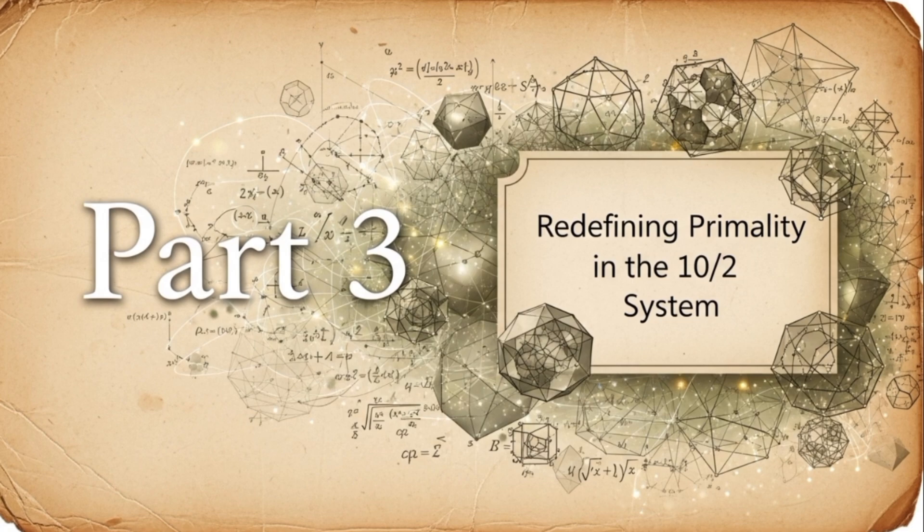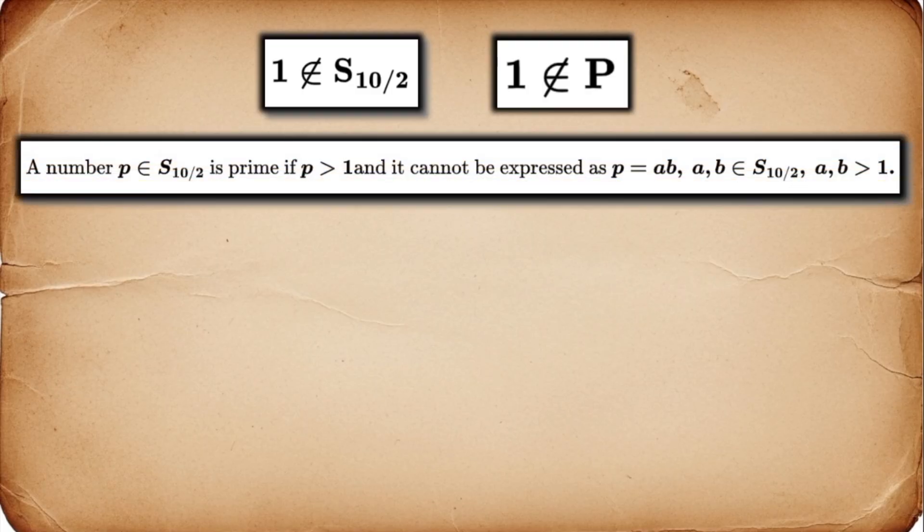Now here is where things get truly interesting. What does it mean for a number to be prime? Normally, a prime number is only divisible by 1 and itself. But in our new smaller universe of S10 over 2, the number 1 doesn't even exist. We can't write it. It's not part of our system. So, we need a new definition of primality that makes sense inside the 10 over 2 system. A number in S10 over 2 is prime if it is greater than 1 and cannot be factored into two other numbers that are also in S10 over 2.